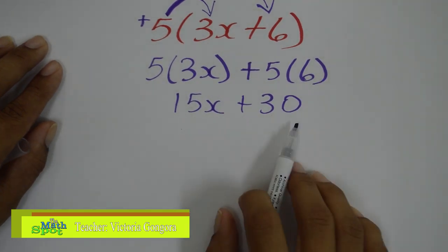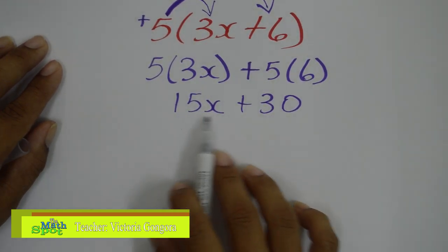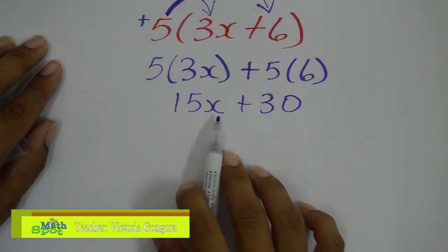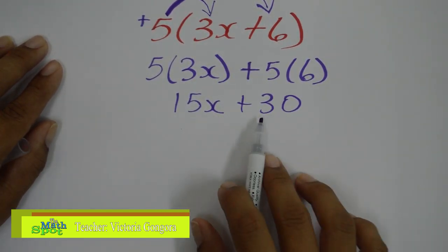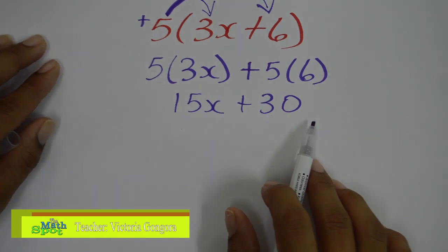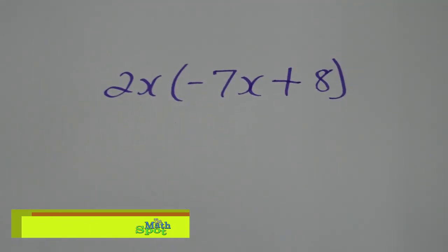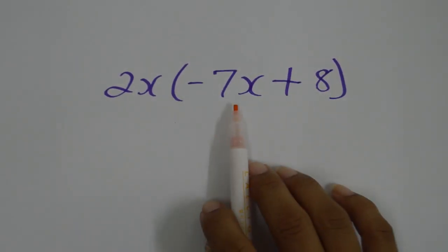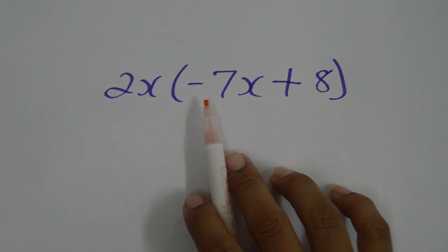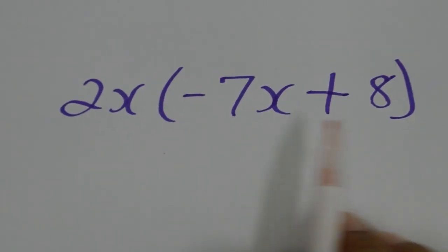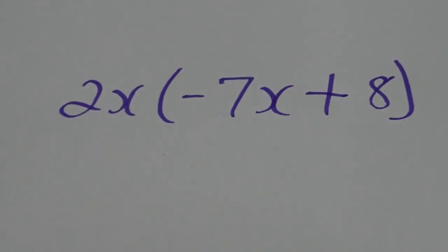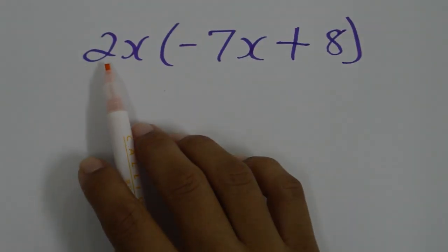This cannot be simplified further since 15x is an algebraic term and 30 is a constant. Looking at another example: the term inside the brackets, negative 7x plus 8, will be multiplied by the term directly outside, 2x.